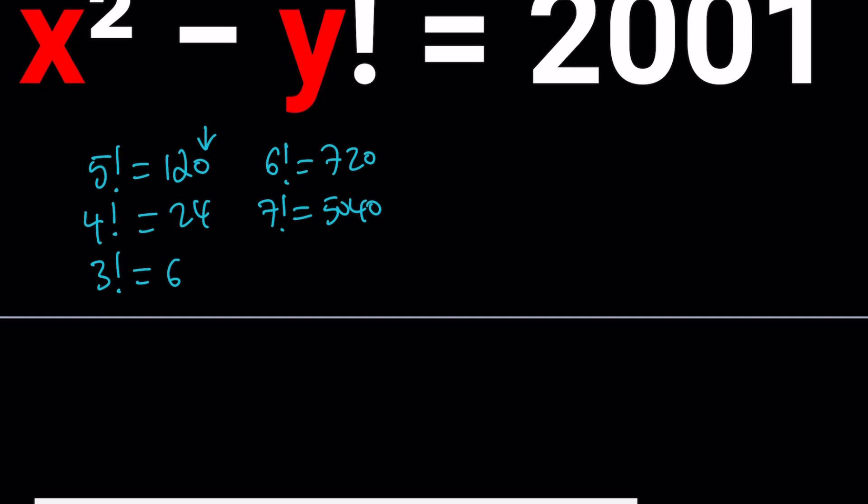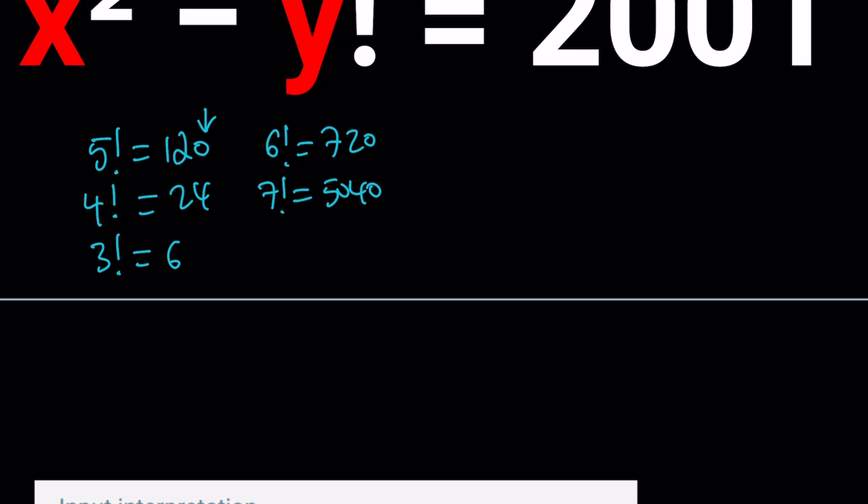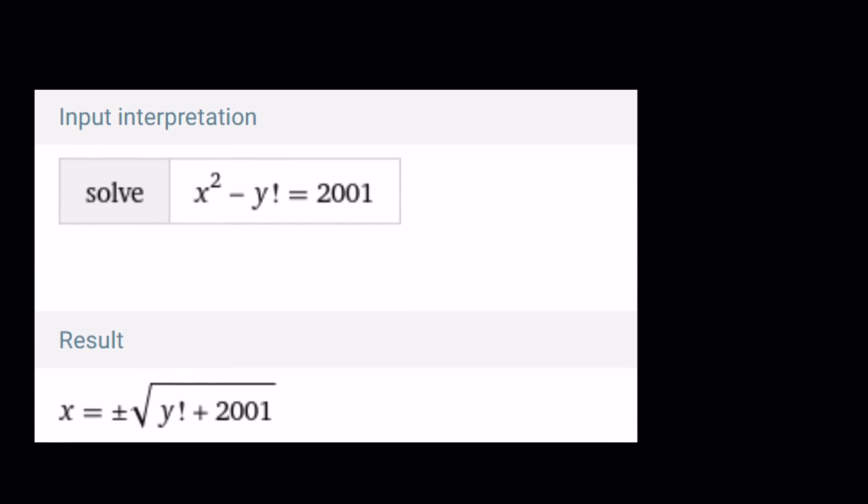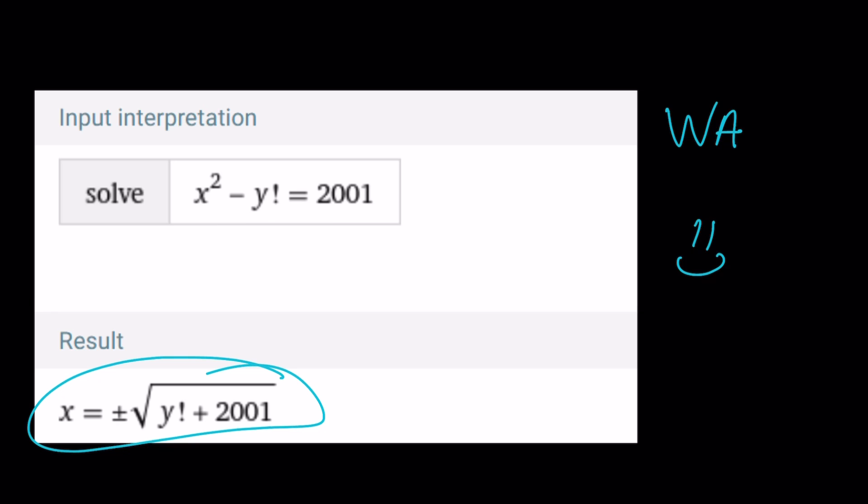Before I start solving the problem, I just want to show you the result from Wolfram Alpha. Wolfram Alpha thinks that it can solve for x, but that's not the solution we're looking for, obviously. Wolfram Alpha could not find integer solutions, even though I prompted integer solutions.